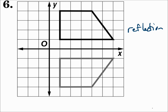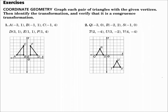Remember: any time it flips over making a mirror image of itself, that's a reflection. If it's just sliding over, that's a translation. And if it's turning around, that's a rotation. Whenever you make a transformation, you can verify that it is a congruence transformation. To verify it, you need to make sure that each of the shapes is the same shape and same size.